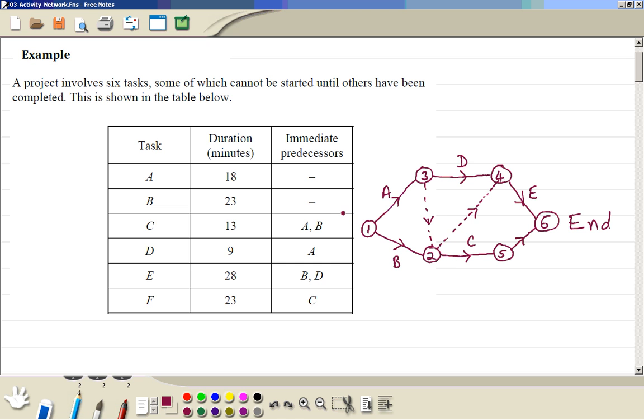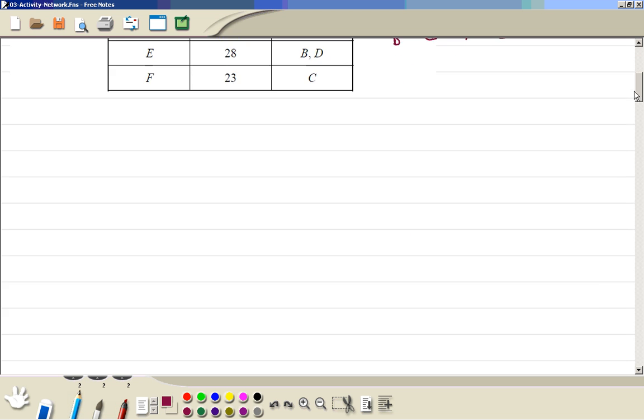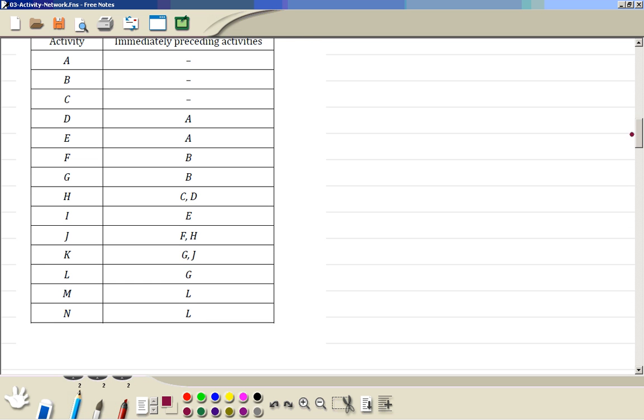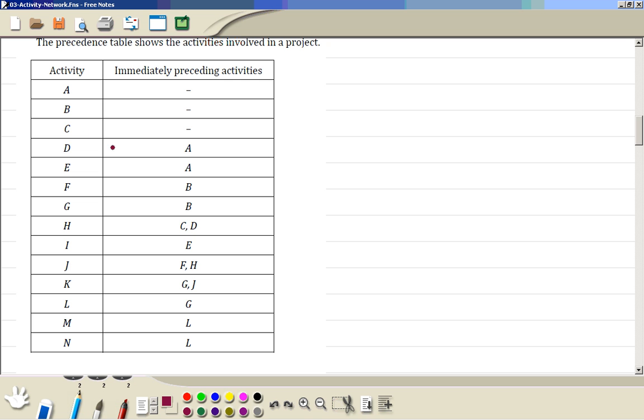And this was the start - A, B, C from event 1, so that's the start. So we can take A up, C to the right, and B down.